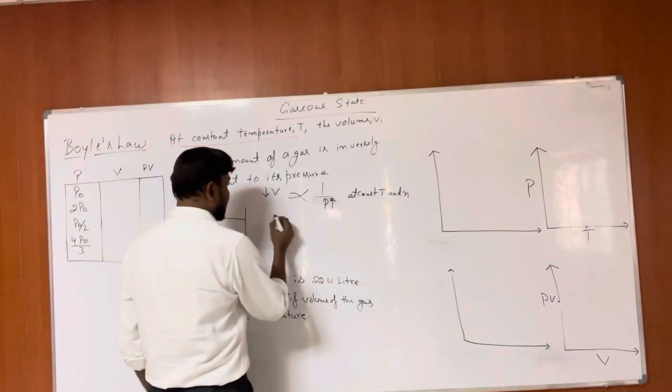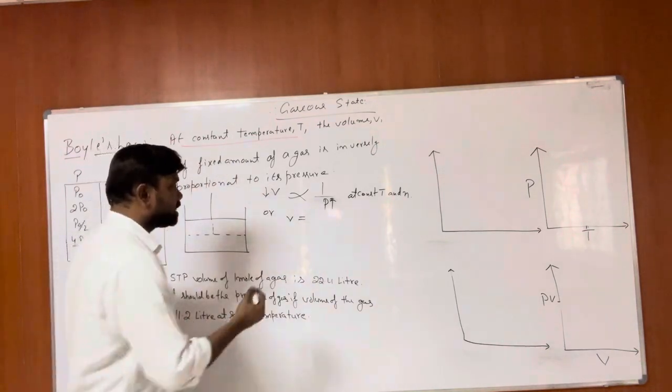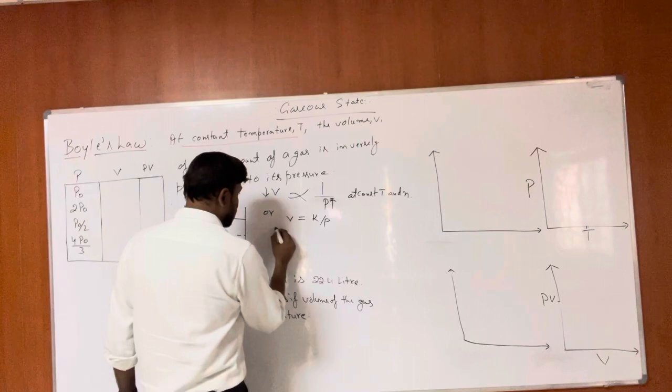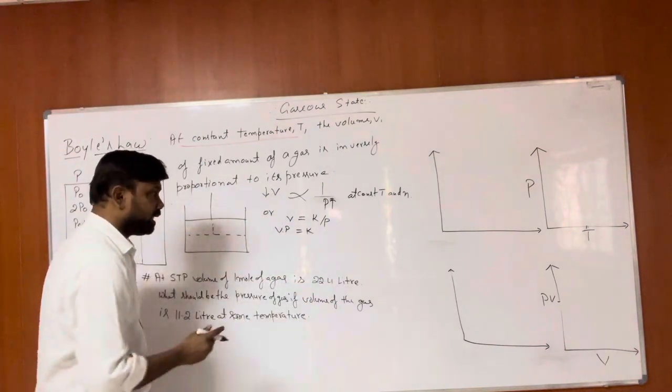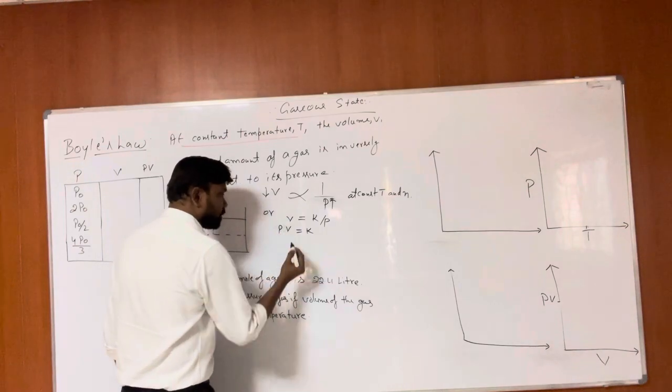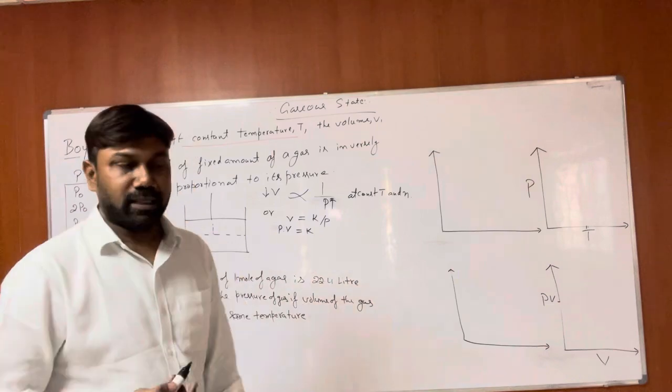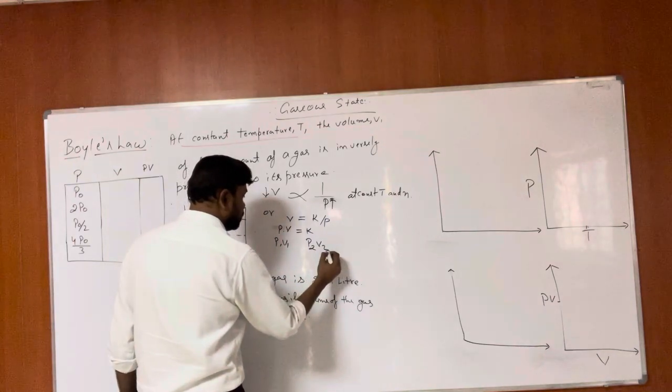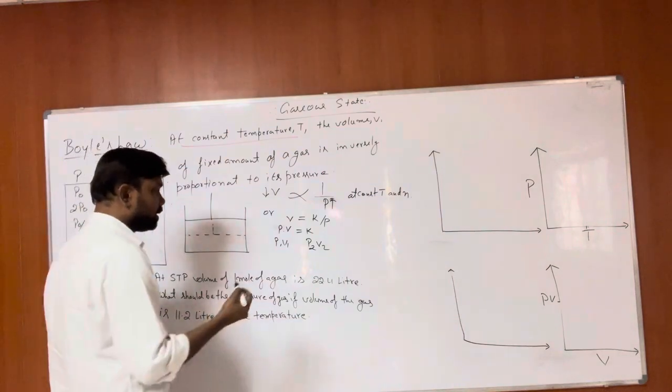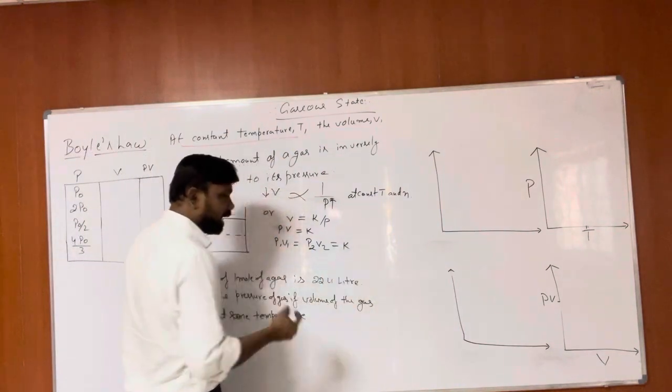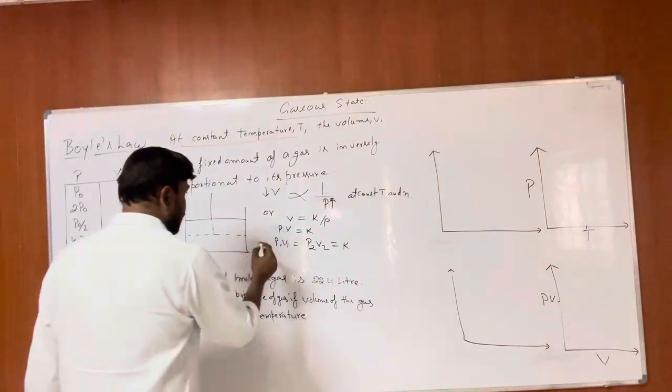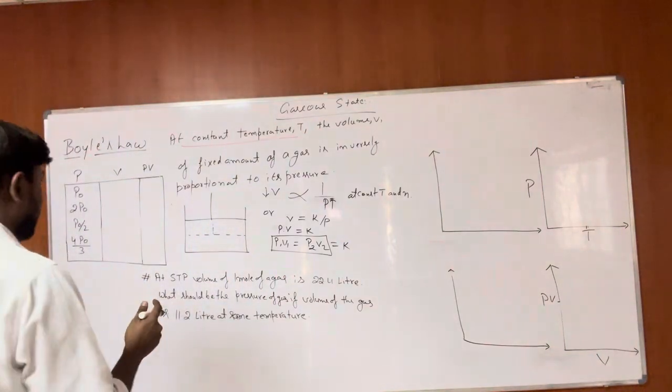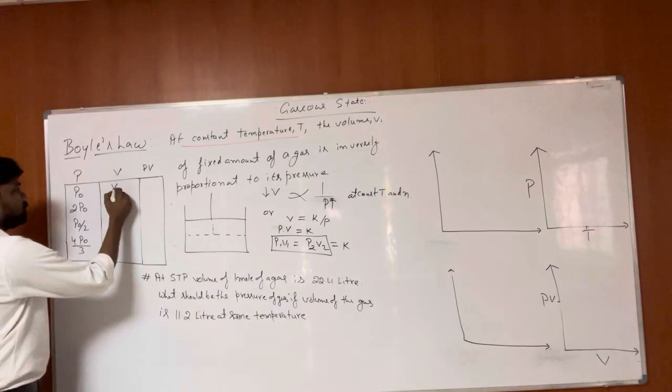Mathematically, we can change it into equality by multiplying a constant, so V is equal to K by P, or PV is equal to constant. So if we have two conditions - condition one where pressure is P1 and volume V1, and other condition with P2 and volume V2, then the product P1V1 is equal to P2V2.